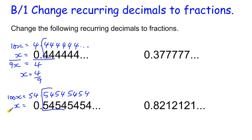So when I subtract these two things, I get 99x. I subtract these two, I get 54. So x equals 54 over 99.